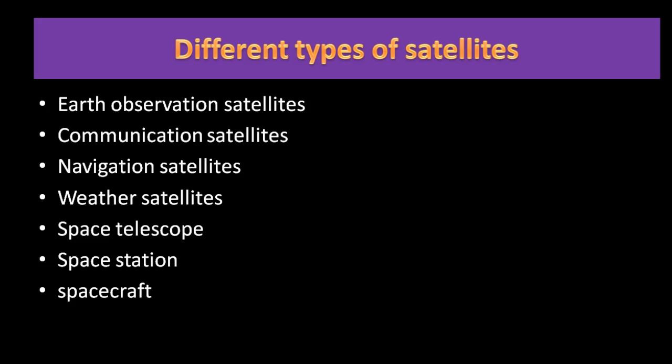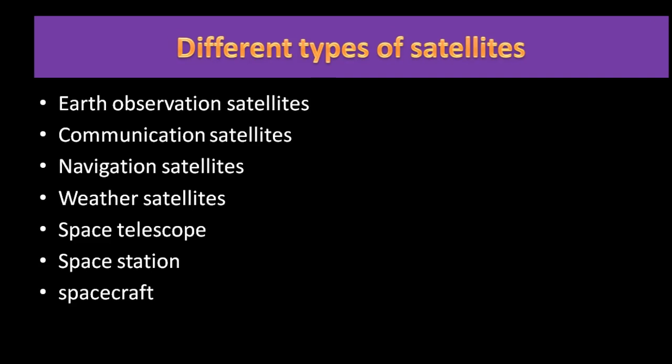There are different types of satellites: Earth observation satellites, communication satellites, navigation satellites, weather satellites, space telescopes, space stations, and spacecraft. Earth observation satellites are used for Earth observation for non-military purposes such as environmental monitoring, and most are in sun-synchronous orbits.